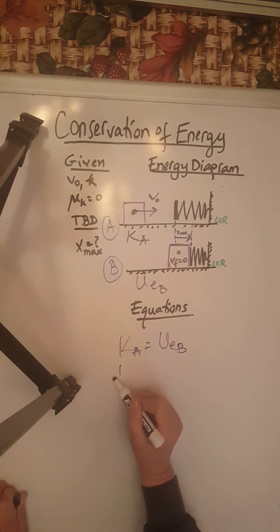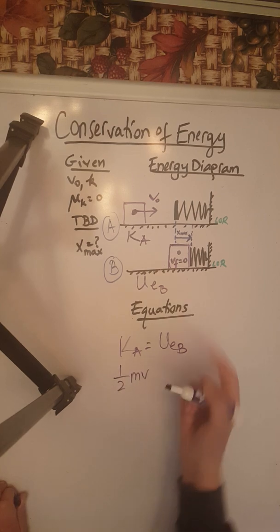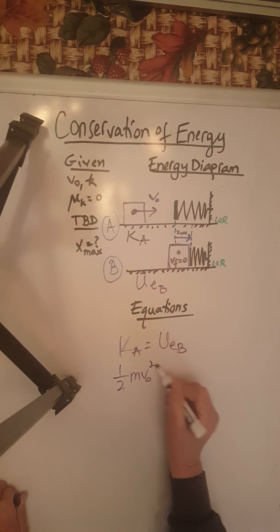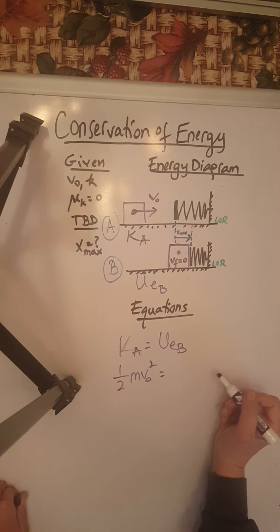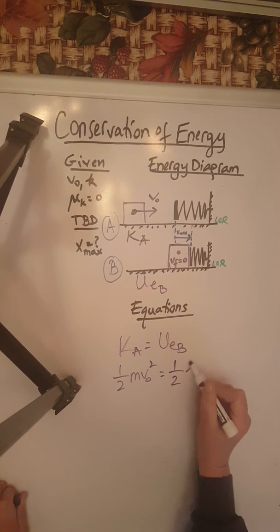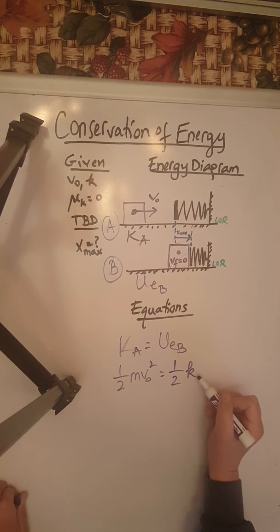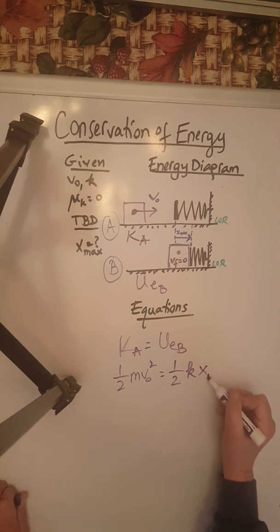We remember that kinetic energy is one-half m v-naught squared, and elastic potential energy is one-half k—little k, which is the spring constant—times x max squared.